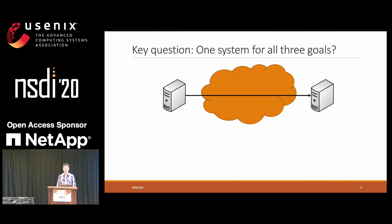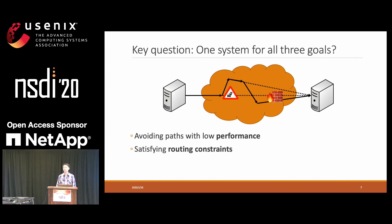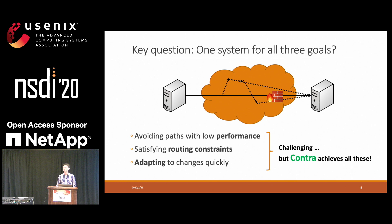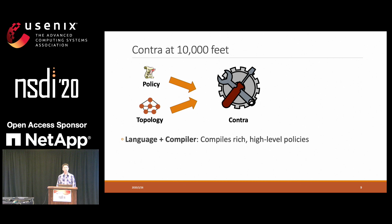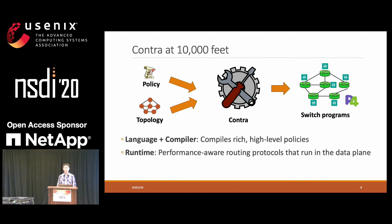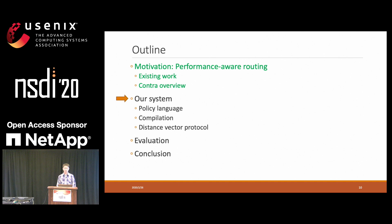Considering a sender sending traffic to a receiver, it may want to avoid congestion, and it may also want to forward traffic through a firewall before it reaches the destination. Also, when a path with higher performance becomes available, we may want to change the path. To achieve all three sounds very challenging, but Contra can achieve all of them. At a high level, Contra provides a language which can support a wide range of high-level policies, and also provides a compiler which will compile these policies into switch programs which implement performance-aware routing protocols running entirely in the data plane.